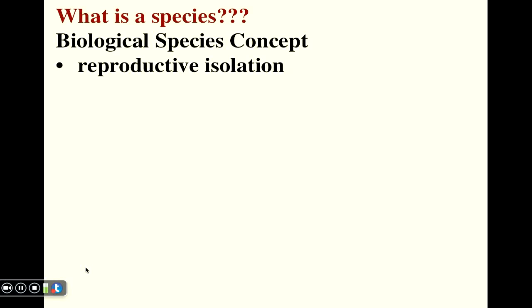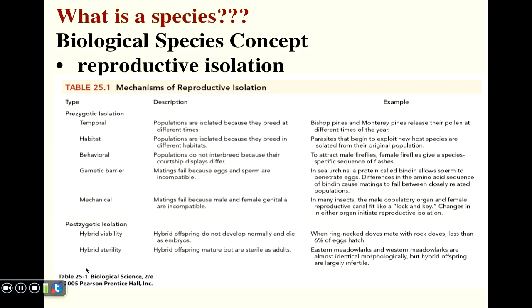So again, the idea is that the definition relies on reproductive isolation. And there are a variety of ways that separate species tend to be prevented from mating with each other and producing viable offspring. For example, we can talk in terms of prezygotic examples and postzygotic examples. So, for example, this table illustrates several prezygotic mechanisms of isolation.